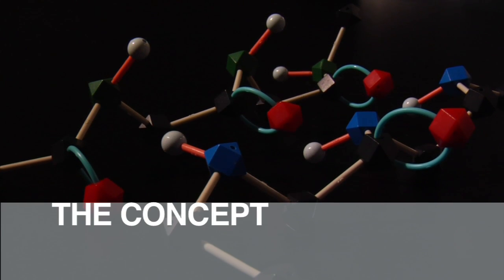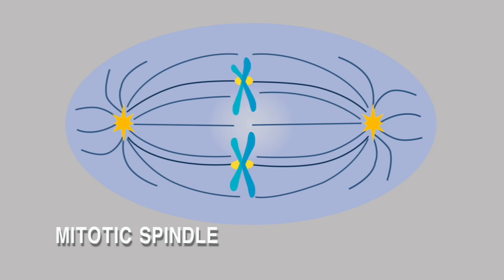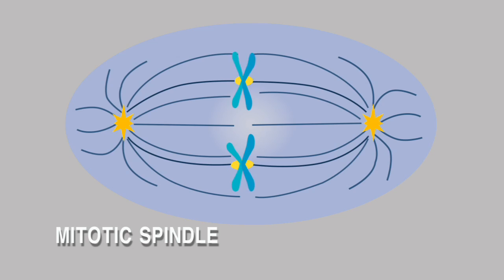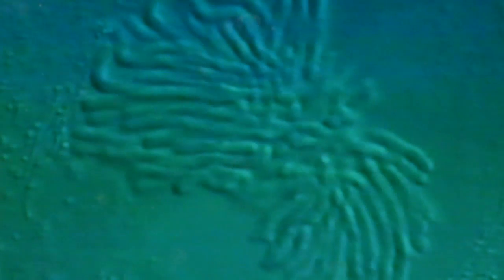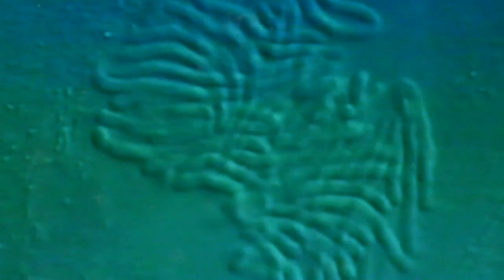The concept I wanted to present was the movement of chromosomes during cell division — how do chromosomes structurally organize in the mitotic spindle, that is, the structure that separates chromosomes during cell division.